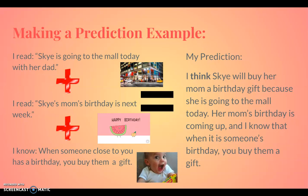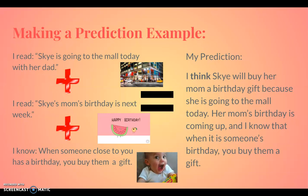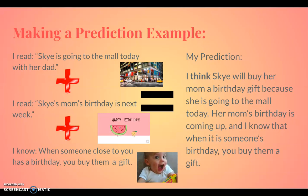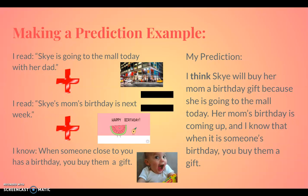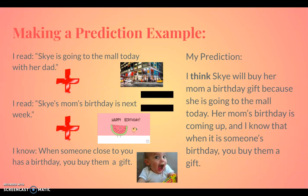I'm using information from the text and information I already know based on my own experiences to make a prediction about what I think will happen next. This is different from an inference because an inference tells us what is already happening in the text, whereas a prediction tells us what we think is going to happen next.